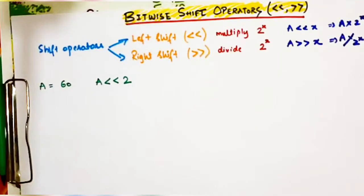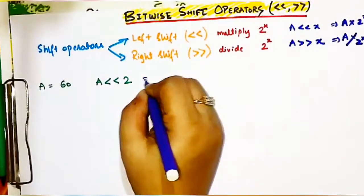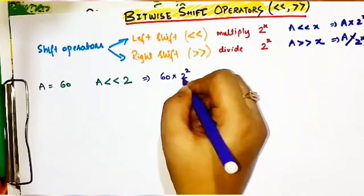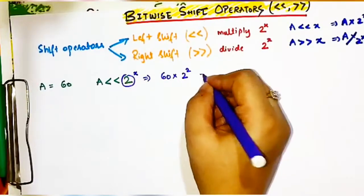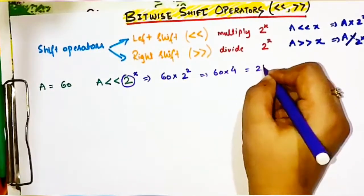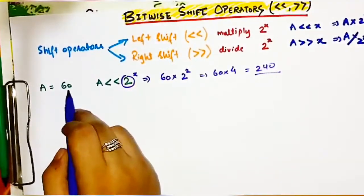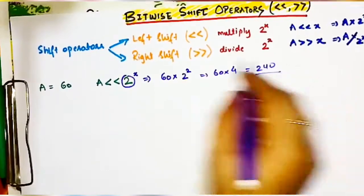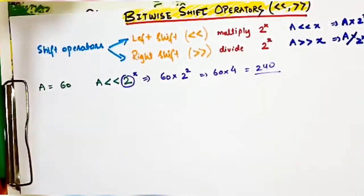In this example, the answer will be 60 × 2 to the power 2, because our x is 2 here. So the answer is 60 × 4 which equals 240. When you left shift 60 by 2, the result is 240. This was all in decimal. Now let's understand how it works in binary.